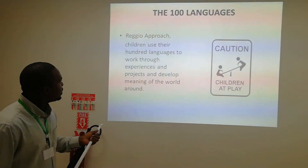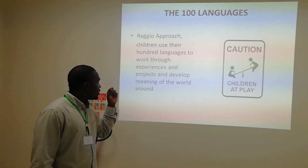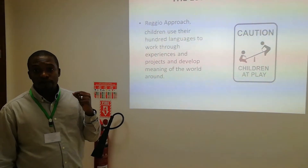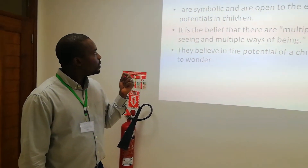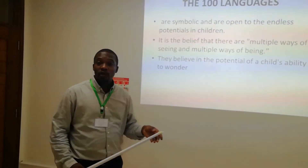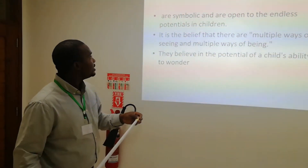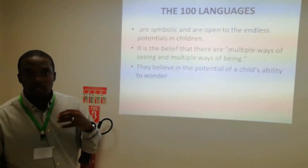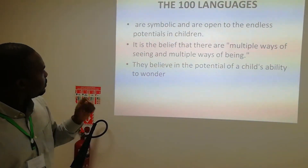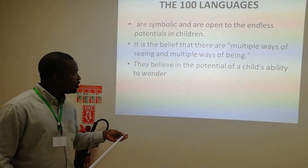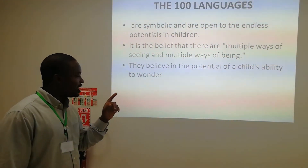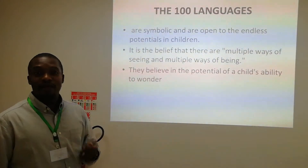The Reggio approach argues that children use their 100 languages to work through experiences and projects and develop a meaningful world. The 100 languages can be seen as a symbolic language and are open to the endless potential in children. It is a belief that there are multiple ways children see things, and finally, they believe in the potential of every child's ability to wonder and explore the world.